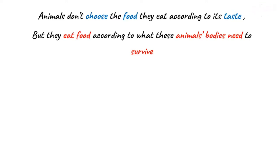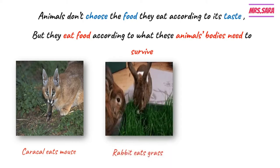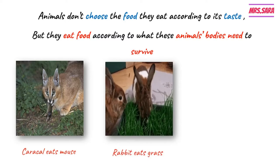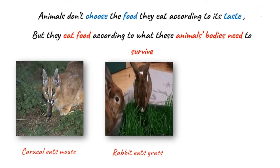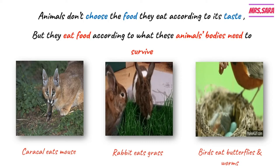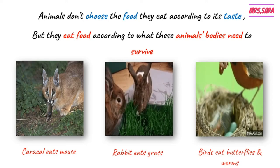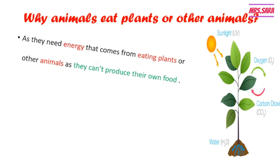Animals don't choose food according to its taste, but they eat food according to what their body needs to survive. The caracal eats mice because its body needs to eat mice. The rabbit eats grass because its body needs grass, not for taste. Birds eat butterflies and worms because their bodies need that kind of food. Why do animals eat plants or other animals?